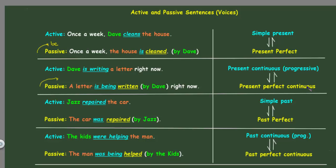The third example: Jazz repaired the car — 'repaired' is simple past. When we switch the subject with the object, we have 'the car,' and 'to be' takes the simple past tense, which is 'was.' The third form of 'repair' is also 'repaired.' So we get: the car was repaired by Jazz.